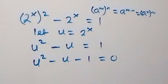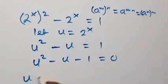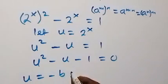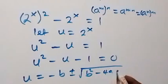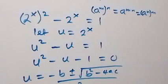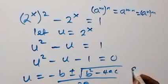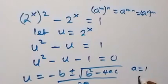Now, from here we use the quadratic formula, which is u equals to minus b plus or minus square root of b squared minus 4ac, over 2a. In this case, a is equal to 1, b is minus 1, and c is equal to minus 1.